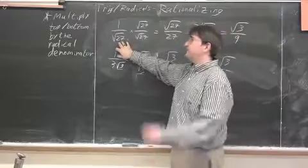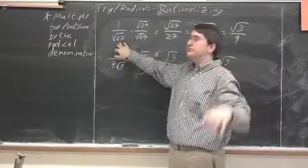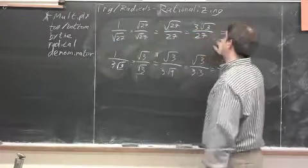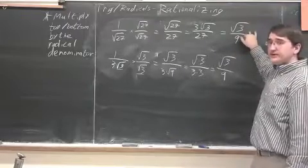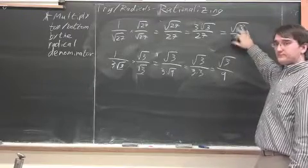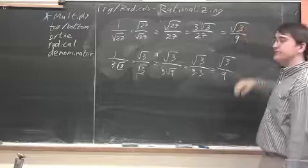Just as soon as you get to that radical 27, even though you know it can reduce, wait to do that until after you've rationalized. Just make sure that you do. Make sure that you do simplify the radical, and then reduce the fraction.